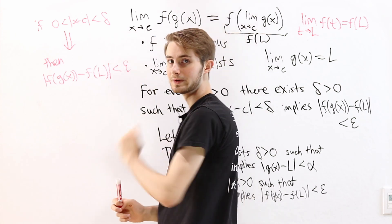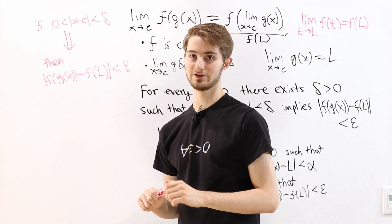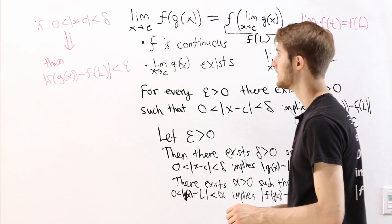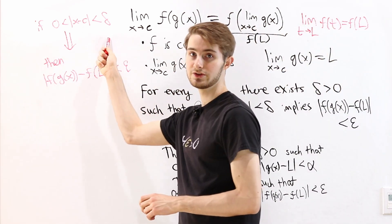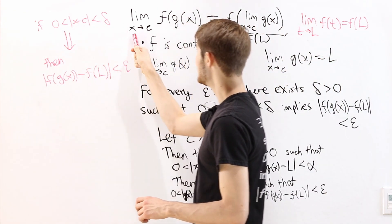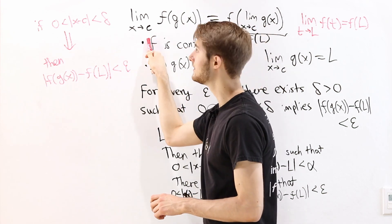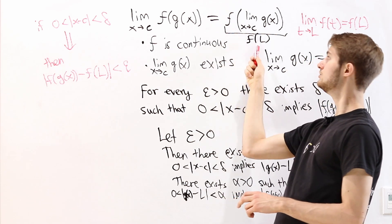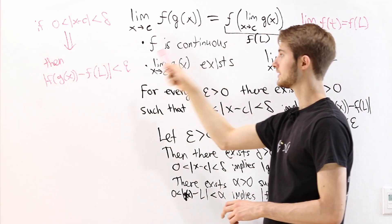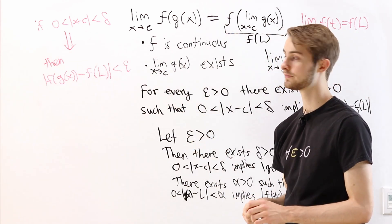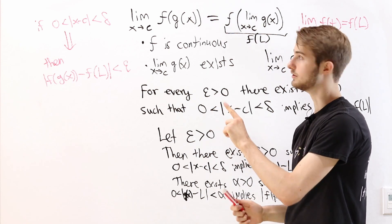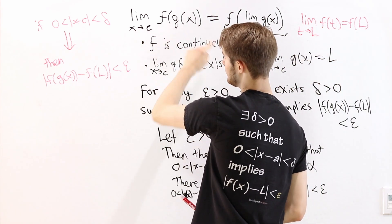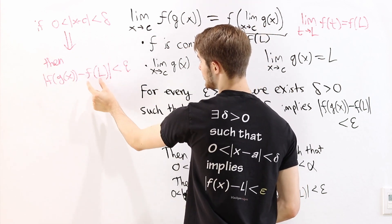We've proved that if the distance from x to c is less than delta, then this absolute value expression is less than epsilon. This is exactly what we need for the epsilon-delta definition of a limit. We say: let epsilon be greater than 0, then there exists a delta greater than 0 such that if the distance from x to c is less than delta, then the distance from the inside expression to the limit value we want is less than epsilon. So we have now proved that the limit as x approaches c of f of g of x equals f of L.